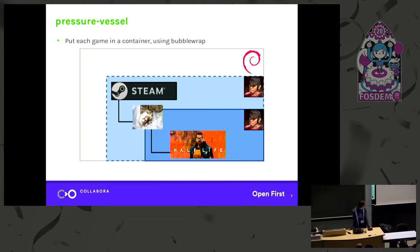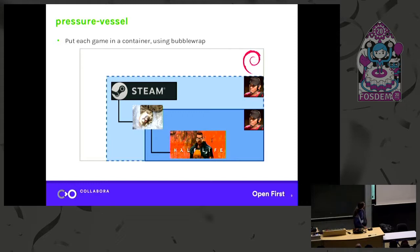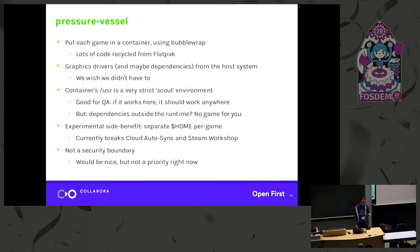The big thing I have been working on lately is PressureVessel. This is a little open source program recycling a bunch of code from Flatpak. Steam is still in the old-style runtime, but as a child process we have Bubblewrap — represented here by its mascot of a Bubblewrap cat. This makes a little container, quite similar to what Flatpak does, with much of the same code. In this container it's a very strict Scout environment: you get the libraries from Scout and no more. If your game was correctly built in a Scout environment, like Half-Life for example, it works fine. If your game is from a less strict publisher, it probably won't work — but it didn't work for some people anyway. So at least they can QA it: if they test in this very strict container, it should work for everyone.